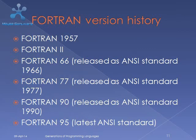Fortran version history: Fortran 1957; Fortran 2; Fortran 66, released as ANSI standard 1966; Fortran 77, released as ANSI standard 1977; Fortran 90, released as ANSI standard 1990; Fortran 95, latest ANSI standard.